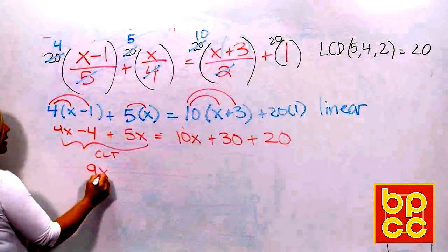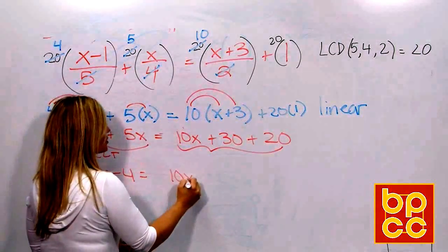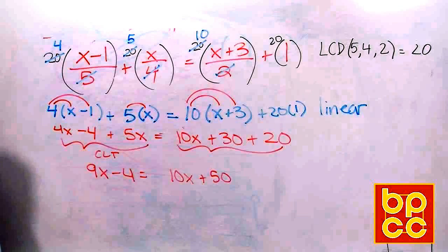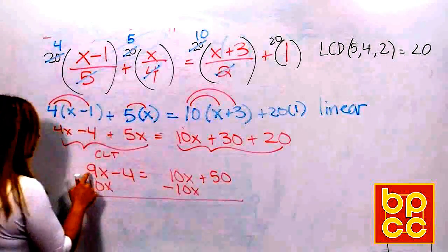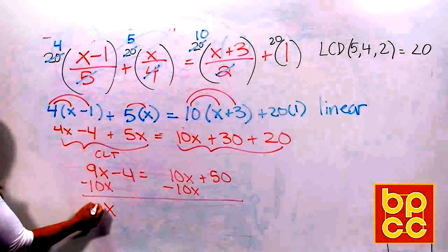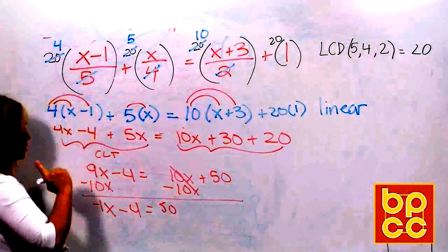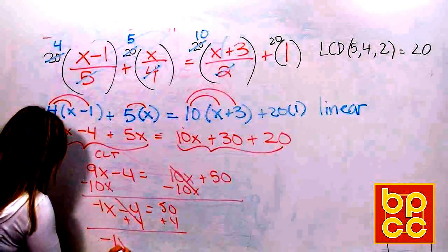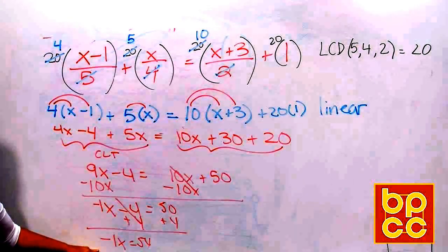Alright, we're going to CLT. What does that stand for? Collect like terms. 4x plus 5x is 9x, and we're going to leave the minus 4. On the right side, we're going to bring down our 10x, and 30 plus 20 is 50. Great. I'm a creature of habit. I always move my variables to the left. 9x minus 10x is negative 1x. Now you can just write negative x, but if you like to put the 1, you can leave the 1. Minus 4 equals 50. Numbers move to the right, we add 4. We add 4.